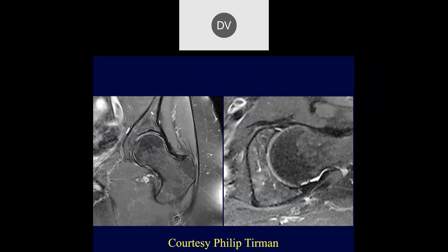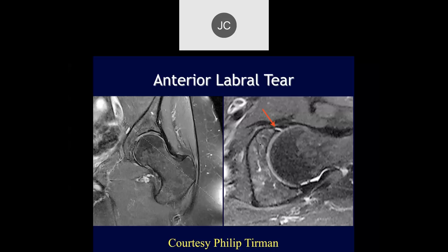Danny — at the superior-anterior labrum there's a little bit of fluid right in the labrum, suspicious for a tear. The posterior looks okay. This was arthroscoped and confirmed as a tear. It's in a slightly different configuration — the fluid appears to go through the labrum itself rather than between the bone or cartilage and the labrum, which makes it a little more likely to represent an actual tear.